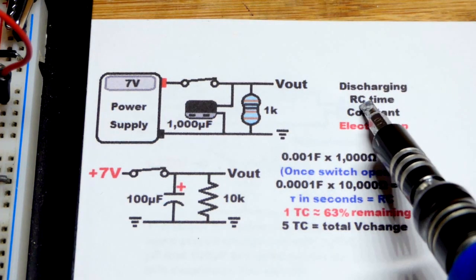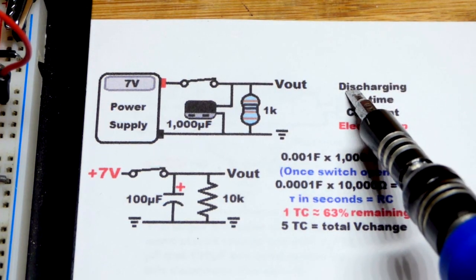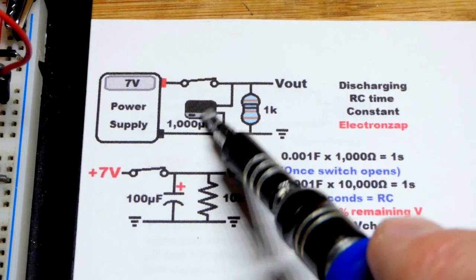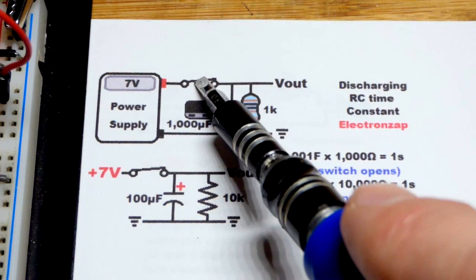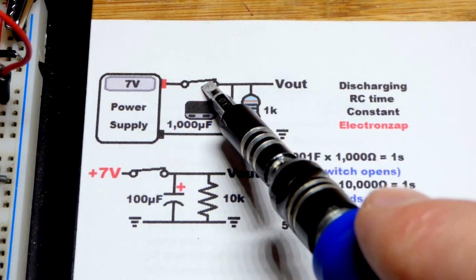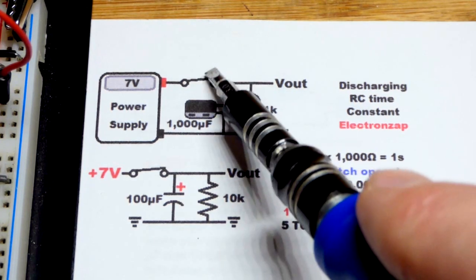So now in this video we're going to look at the RC time constant of a discharging capacitor right there. We're going to keep it charged until I open a switch which is actually just going to be removing a jumper.